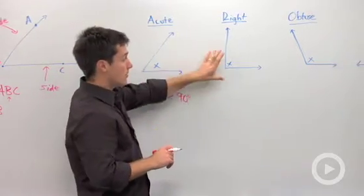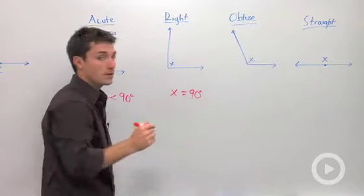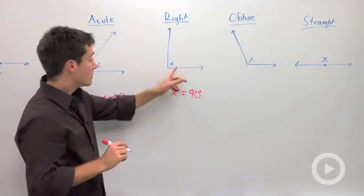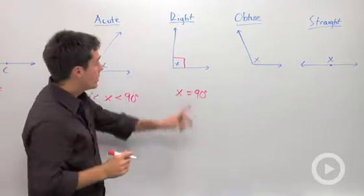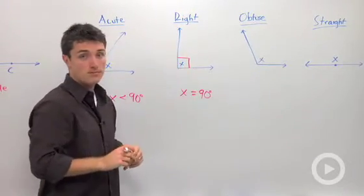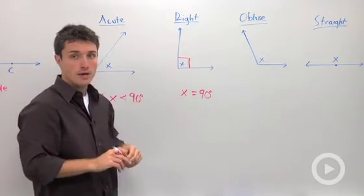A right angle, if this is X, is equal to exactly 90 degrees, a right angle. So we're going to label all of our right angles in geometry using these two segments, which will tell you, the student, that this is a 90 degree angle.